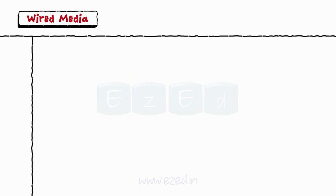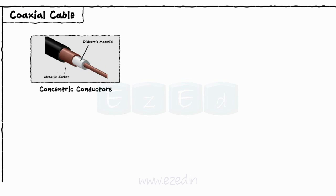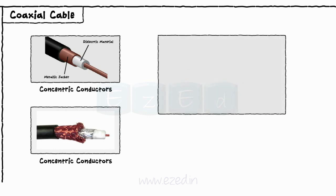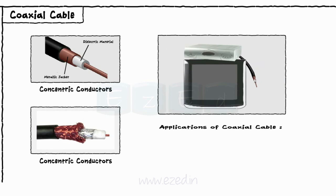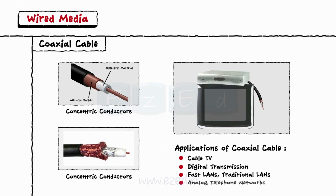Second type of wired media is a coaxial cable. It consists of two concentric conductors separated by a dielectric material. The external conductor is a metallic jacket used for shielding. Such cables are frequently used to connect set-top boxes or TV sets. Applications of coaxial cables are cable TV, digital transmission, fast LANs, traditional LANs, and analog telephone networks.